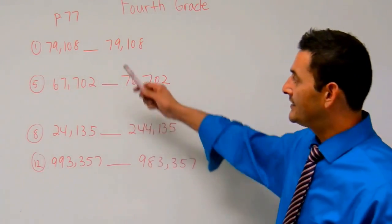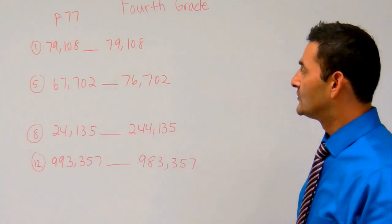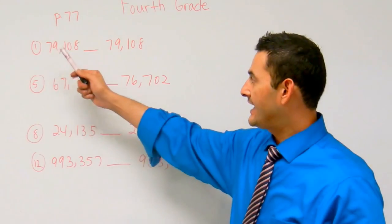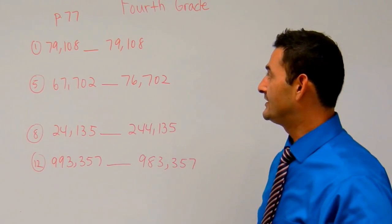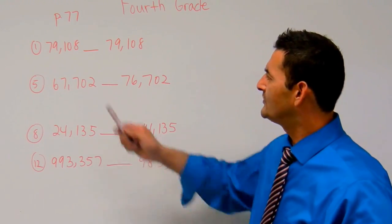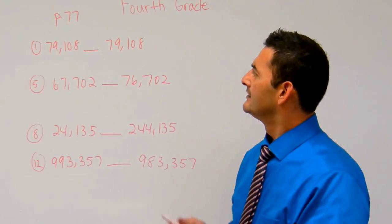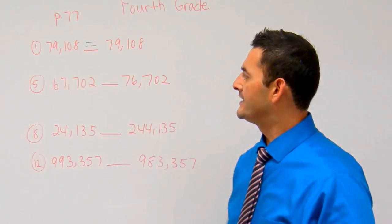Let's take a look at numbers 1, 5, 8, and 12 together. Number 1 reads 79,108 is what to 79,108. Well, those two numbers are equal, right? Because it's the exact same number, I'm going to put an equal sign.